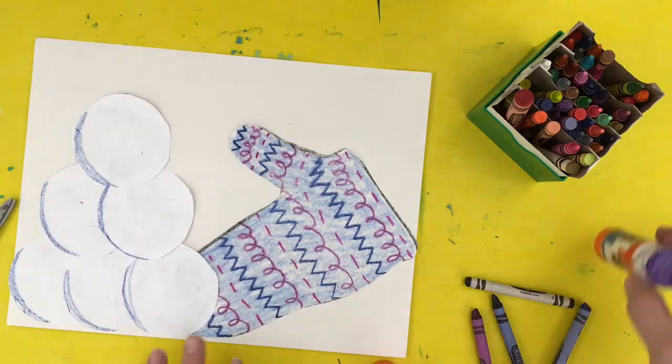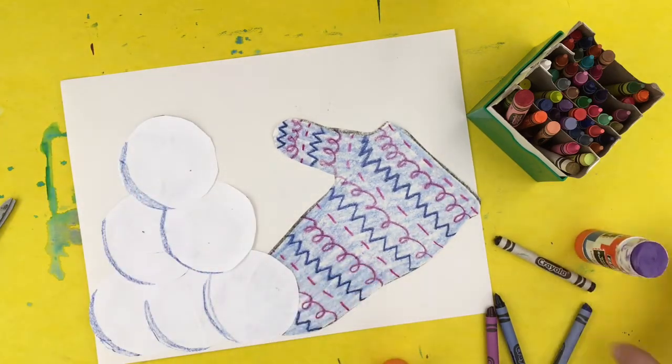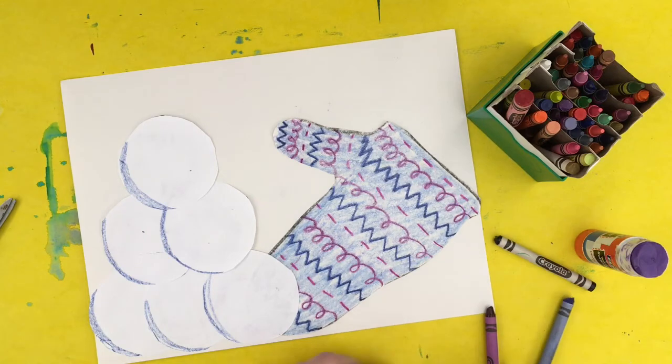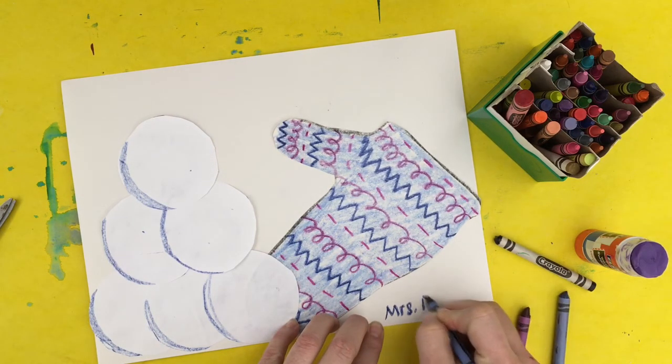And now I have a snowy still life. I have my stack of snowballs and my mitten in the snow. I'm going to sign it like an artist. Now it's your turn to work. Remember, you're taking the circles from your related arts packet.